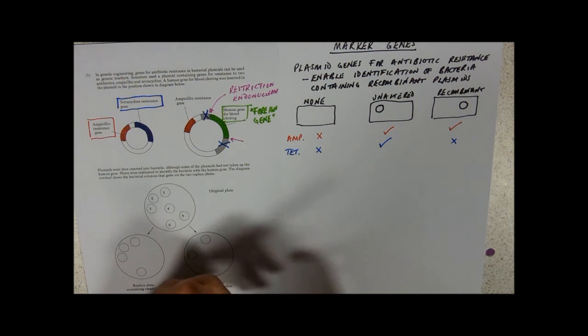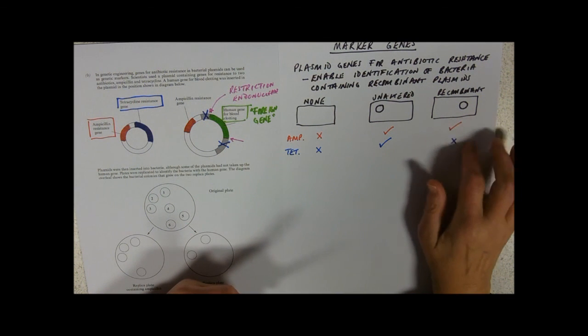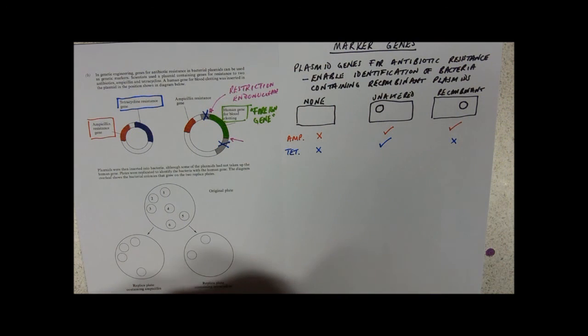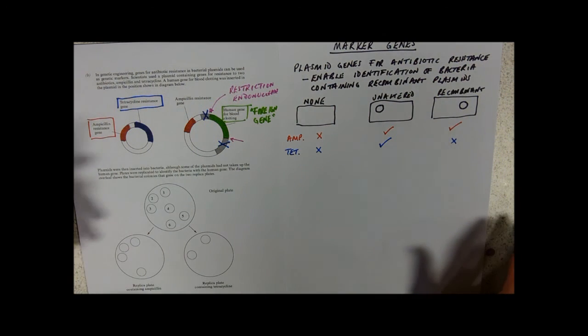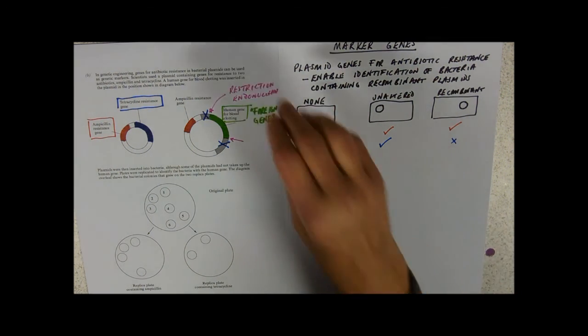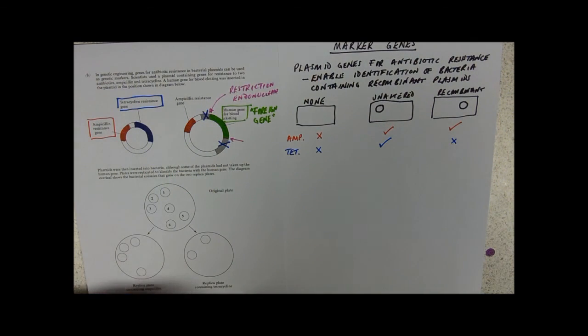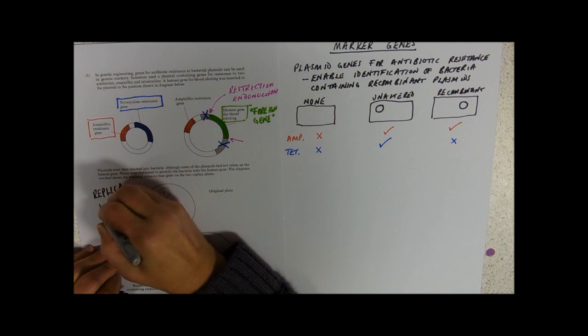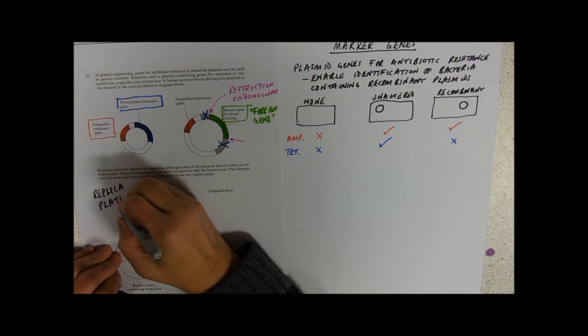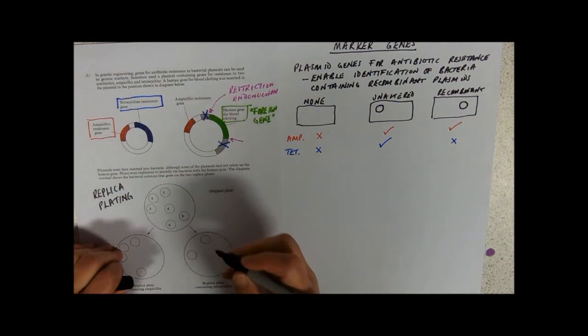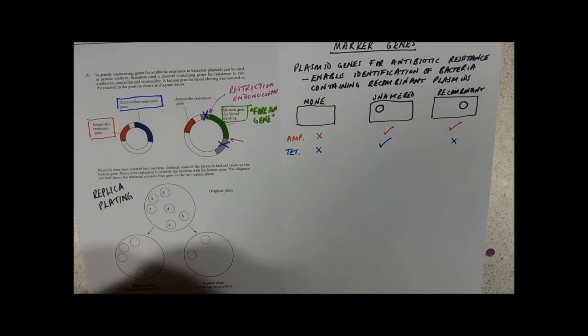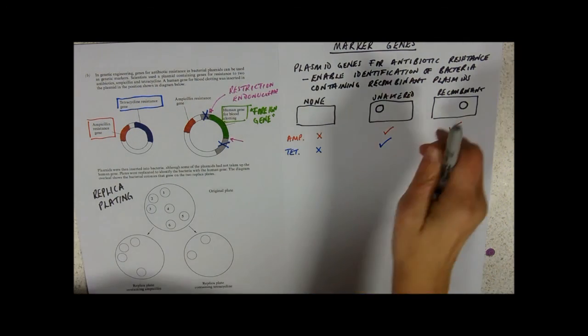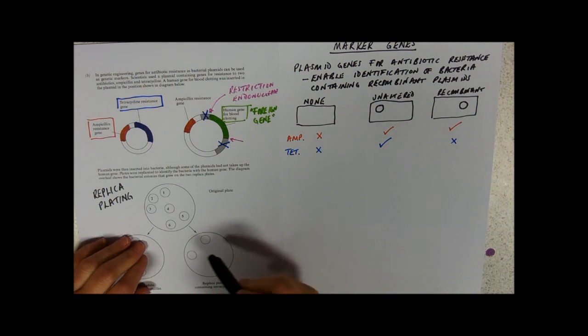And you think, well, that's not very helpful. Because we can identify the ones that survive on both. But what about identifying this one where it dies on a tetracycline plate? So we have to do a technique called replica plating. So this diagram over here represents replica plating. This is effectively making a copy of a plate.